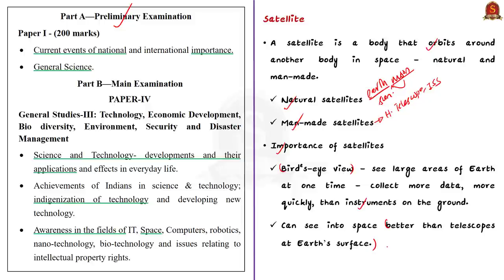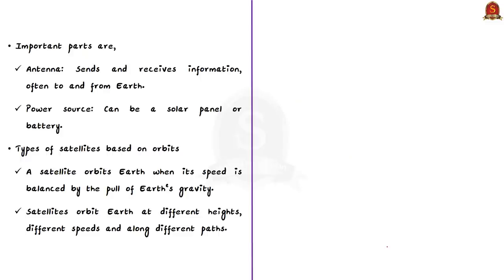If a telescope is located on Earth, clouds, dust, or molecules can block the view of space. So telescopes kept in outer space have a better view to look at planetary objects. Also, there are many types of satellites which come in many shapes and sizes.